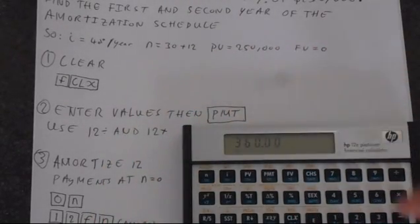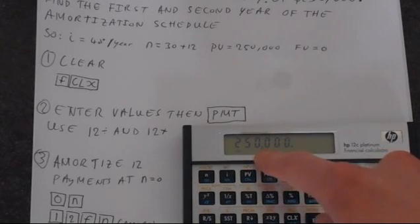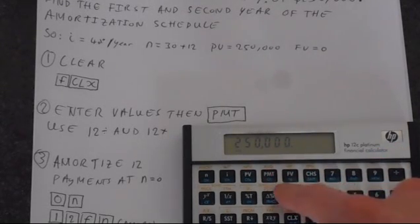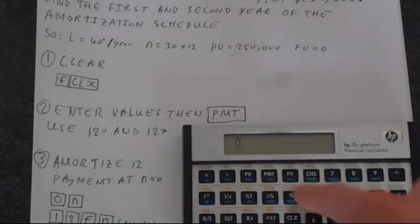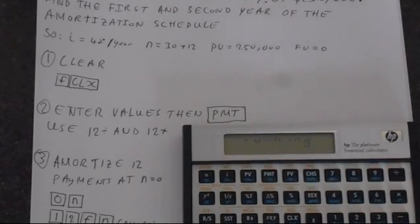Now let's do the present value, which is $250,000. This is going to be positive, and we'll just put that into the present value. And then 0 goes into future value, and if we press payment, it'll calculate what payments are made.